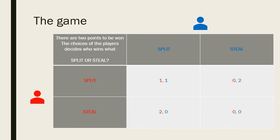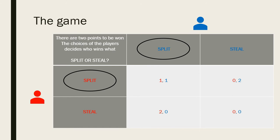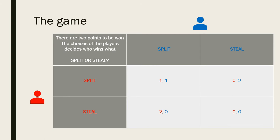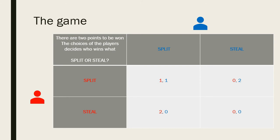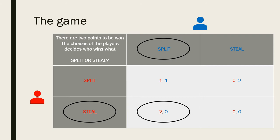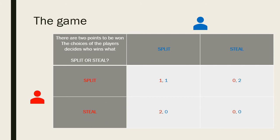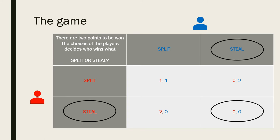In each section, the red number is the number of points won by the red player, and the blue number is the number of points won by the blue player. For example, if both players choose to split, we would end up with the top left outcome, and the players would split the two points to earn one point each. However, if the red player chose to split but the blue player chose to steal, the blue player would steal the red player's points and earn two points while the red player wins nothing. The opposite happens if the blue player splits and the red player steals. But if both players try and steal, it doesn't work and no one wins the points, so both players end up with nothing.